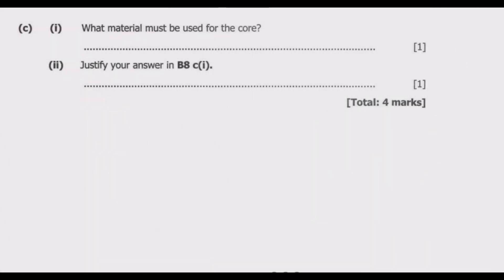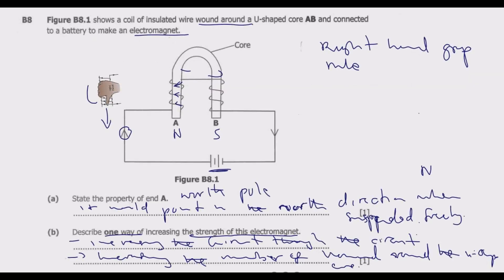Question C, number 1: What material must be used for the core? The material that should be used for the core should be soft iron. So soft iron should be used for the core AB.